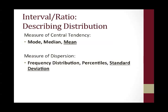4.3 days actually corresponds to something meaningful to us. So again, measures of central tendency when you're working with interval ratio data include mode, median, and mean. Measures of dispersion include frequency distribution, percentiles, and standard deviation.